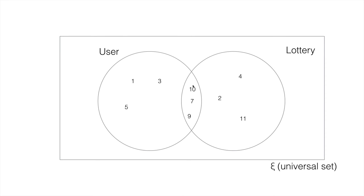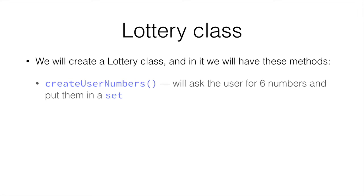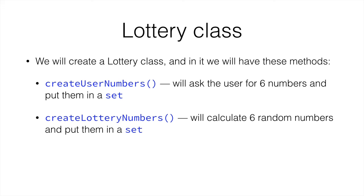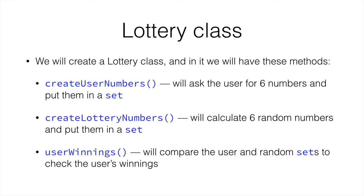So this means our user has 3 numbers that match with the lottery. If we took this user set and called retainAll with the lottery set, our user set would end up with only these 3 numbers. The lottery set would remain unchanged. So we'll create a lottery class and it will have the methods: createUserNumbers, which will ask the user for 6 numbers and put them in a set; createLotteryNumbers, which will calculate 6 random numbers and put them in a different set. Then our method called userWinnings will call retainAll with the lottery set, check the number of items left in our user set, and print out the winnings.